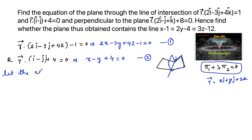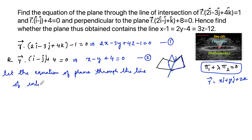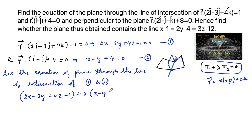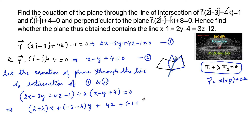Let the equation of the plane through the line of intersection of the given planes be: (2x - 3y + 4z - 1) + λ(x - y + 4) = 0, which can also be written as (2 + λ)x + (-3 - λ)y + 4z + (-1 + 4λ) = 0. Let us consider this as equation 3.